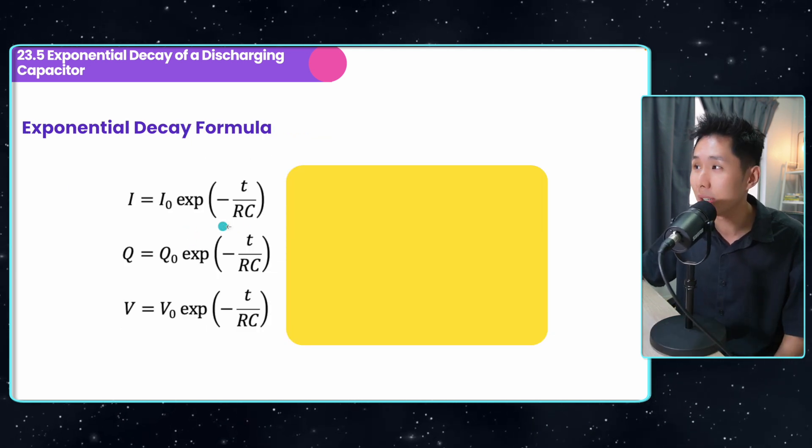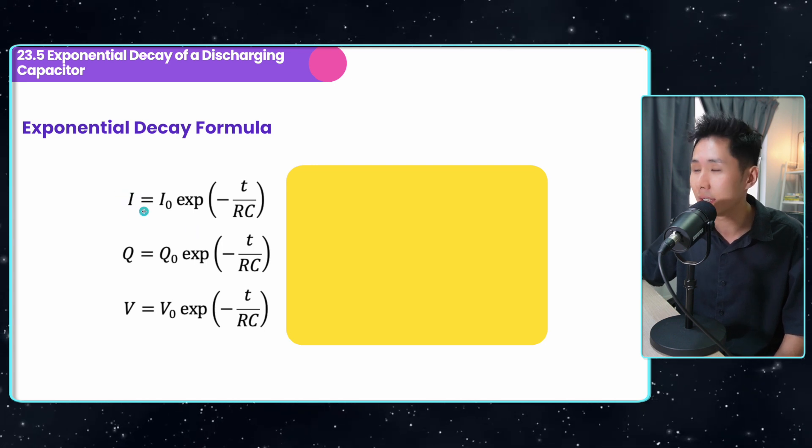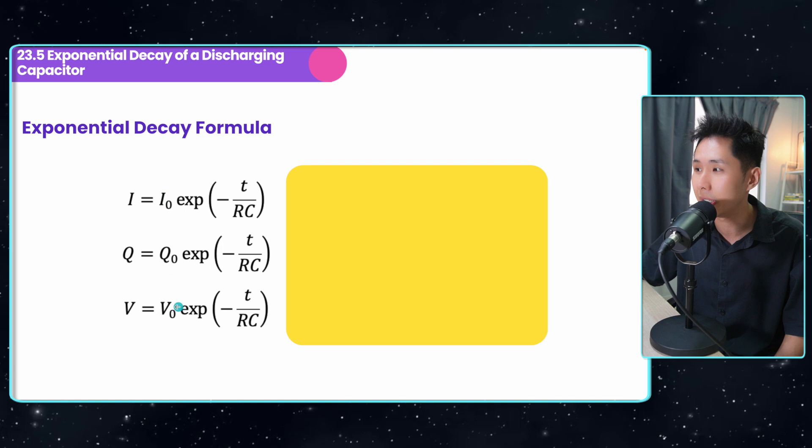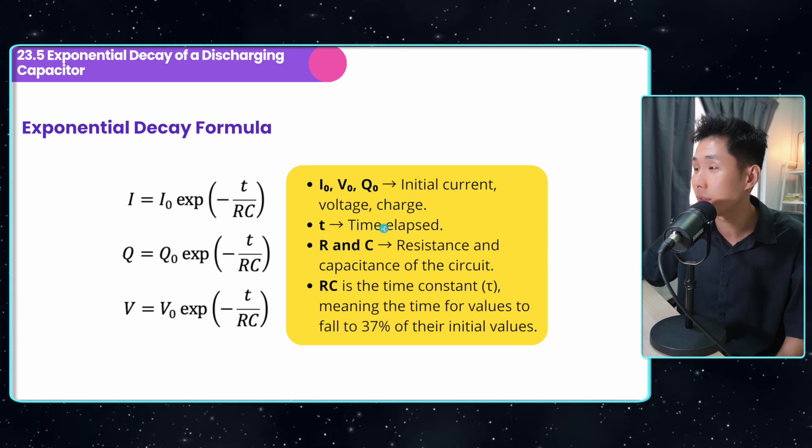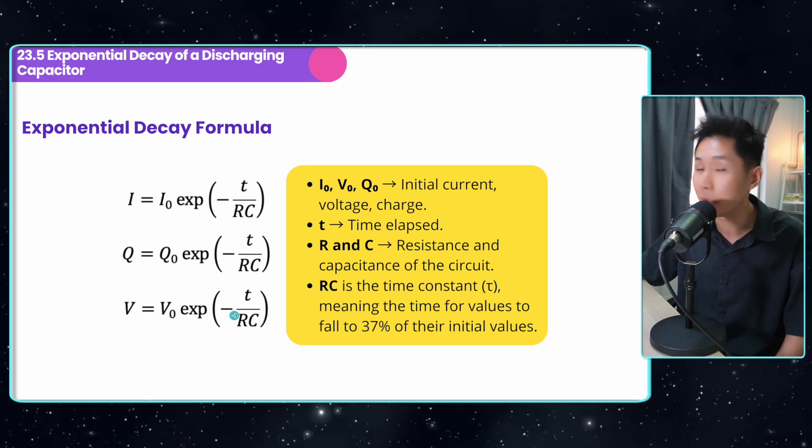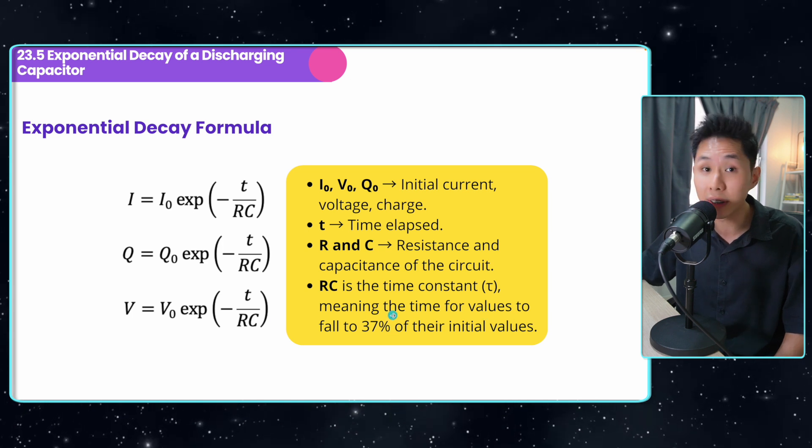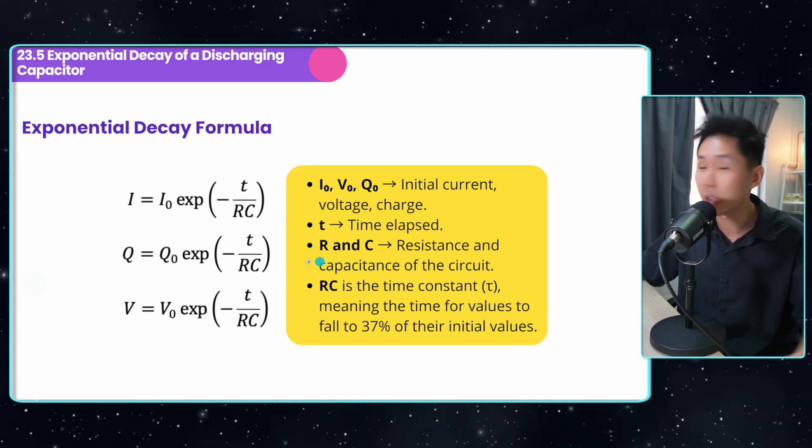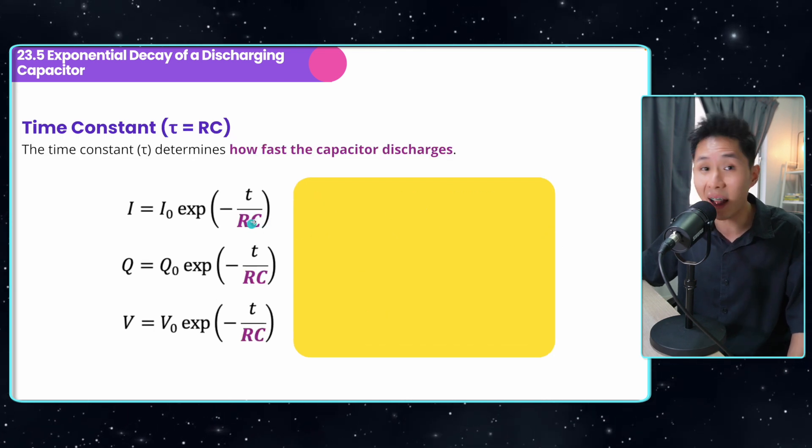And this is the exponential decay formula. There are three formulas here. The only things that are different is I is for current, Q is for charge, V is for voltage. So let's explain what are the quantities here. t stands for time elapsed and C is the capacitance. And RC is what we call the time constant. It is the time for values to drop to 37% of their initial values. I'm going to show you how to use the formula in a bit. But before that, let's dive deeper into this RC here.